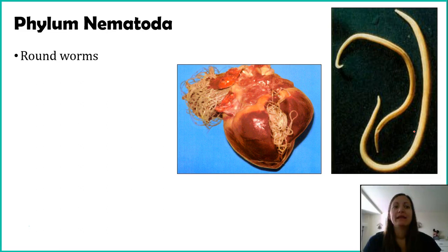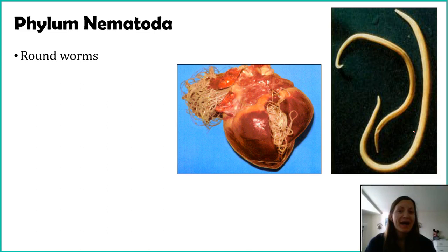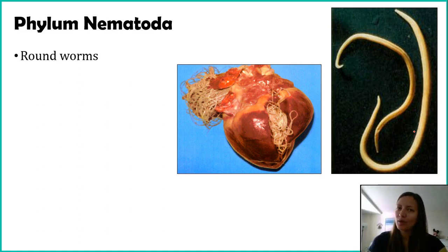The phylum we're going to talk about in this video is phylum Nematoda, colloquially referred to as the roundworms. And yes, these worms are actually round. This matters because we're going to talk about flatworms later, which are quite literally flat, and segmented worms, which are actually segmented. There are lots of worms out there, but they have quite different morphologies.